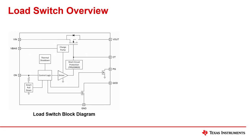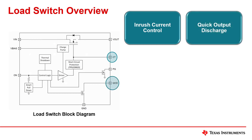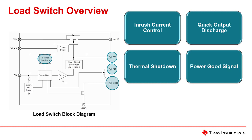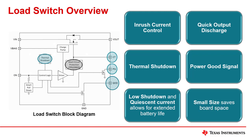First, we have load switches, which are generally used for power distribution and processor power sequencing. They have been used in applications of 0 to 18 volts and 0 to 10 amps of current. They also have a few key features, such as inrush current control, quick output discharge, thermal shutdown, and power good signal. Some even have short circuit protection. A key characteristic of load switches is the low shutdown and quiescent current, which is why they're commonly used in power saving applications.